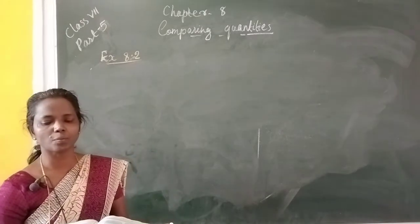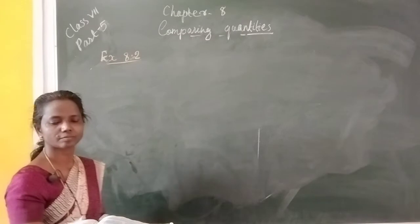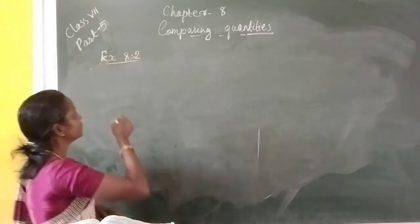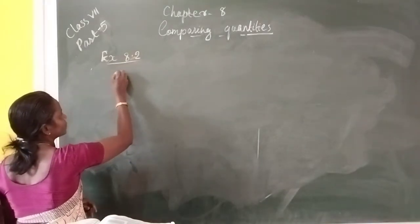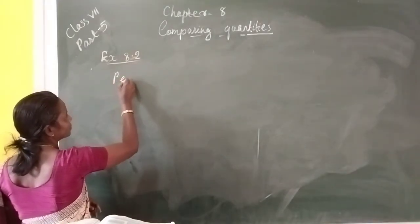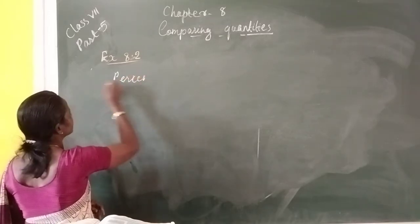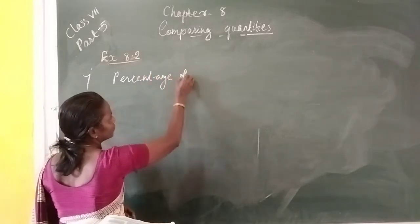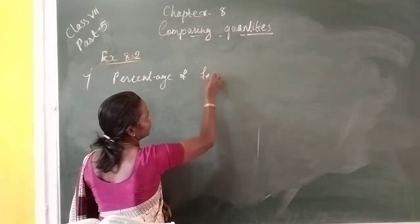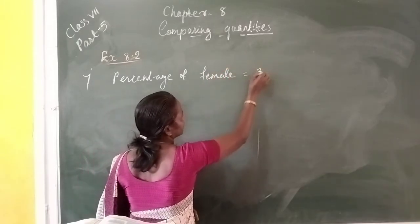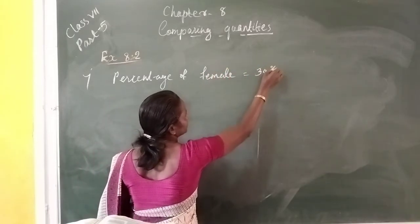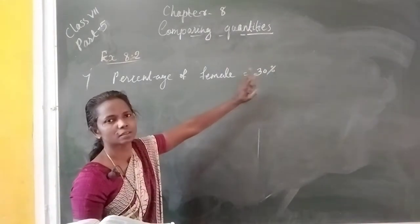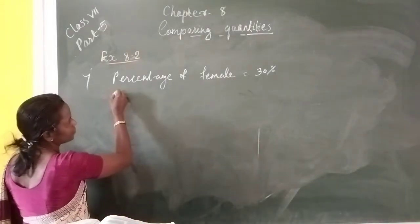We know that in a city, the total population is 100 percent. Percentage of females is equal to 30%, meaning out of 100 people, 30 are females. And the percentage of males is 40%.